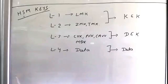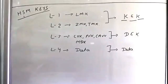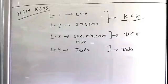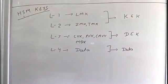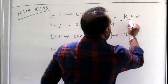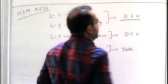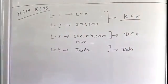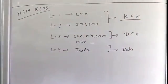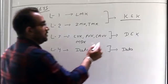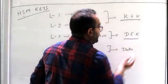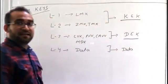Level four is the actual data, which is encrypted and securely stored in the system. Now to understand what these keys are, they are further divided into two types: one is KEK — Key Encryption Key — and the other is DEK — Data Encryption Key.